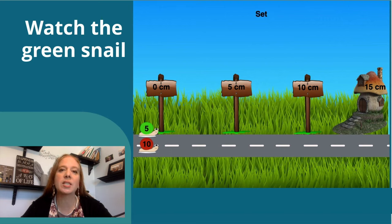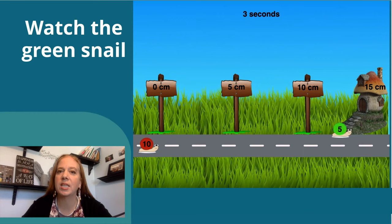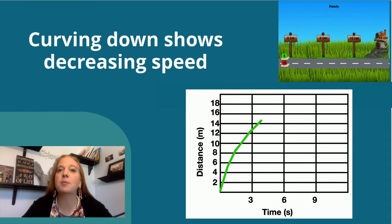Now look at the green snail. Notice it's not covering as much ground towards the end. That's because it's decreasing speed. Curving down shows decreasing speed.